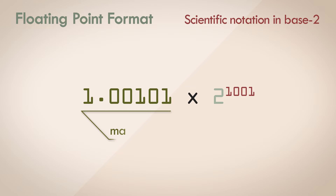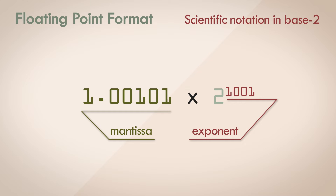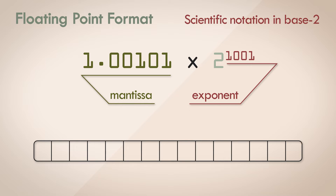So we have two parts: namely the mantissa, which represents the significant digits of the number and thereby its accuracy, and the exponent, which is the number raised as the power of the base of the number system. The base is 2 here for the binary number system. Some bits are allocated to store the mantissa, some for the exponent, and possibly a bit for the sign as well.